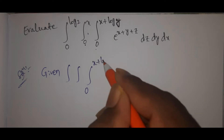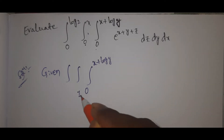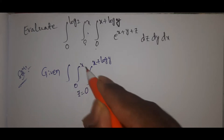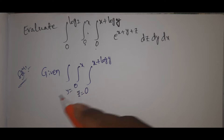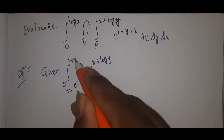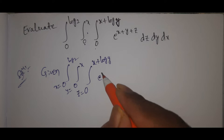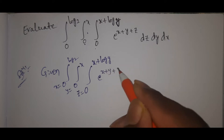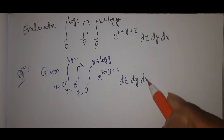For x plus log y, the limit goes from x to y. For z, the limit is 0 to x plus log y. Then we have 0 to log 2, and the integrand is e to the power x plus y plus z, dz dy dx.